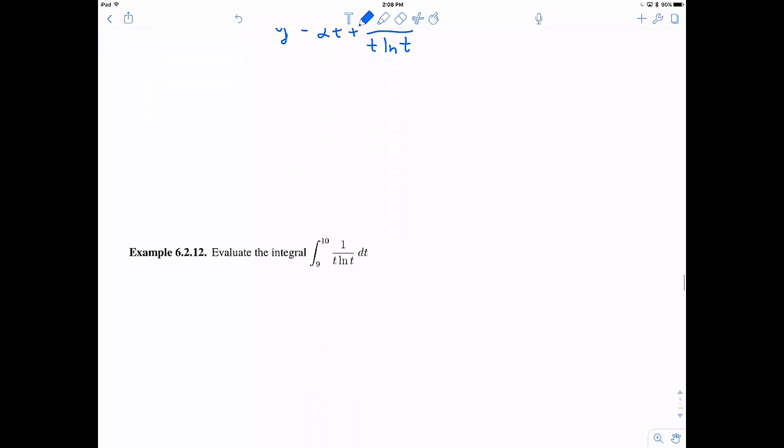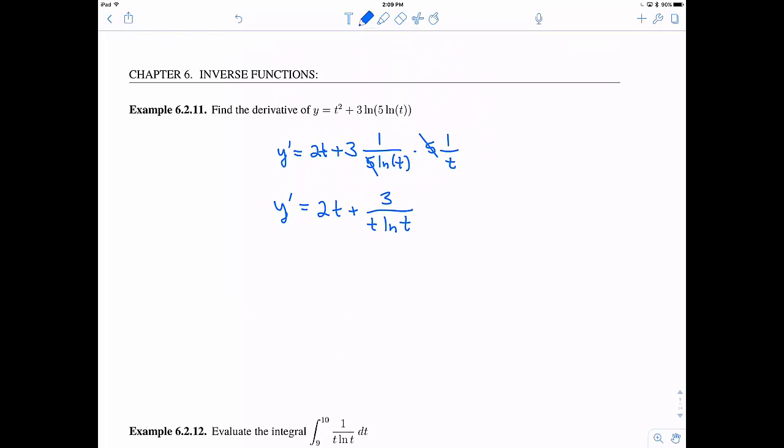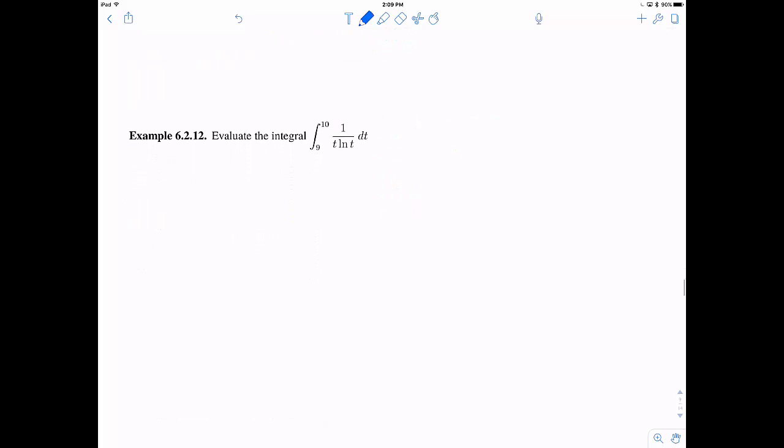And then thinking how can we go backwards. So I have an integral of something 1 over t natural log of t from 9 to 10 dt. And this should look a little bit familiar from my answer up here. So these are somewhat related, but let's imagine that they weren't. How would we do this?